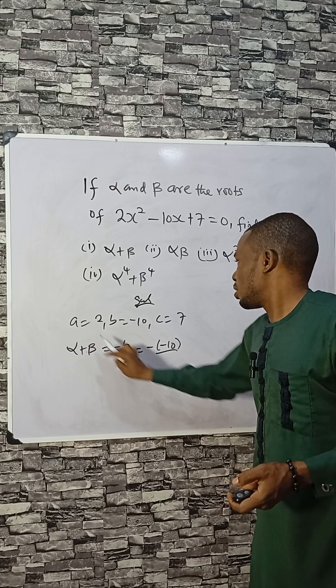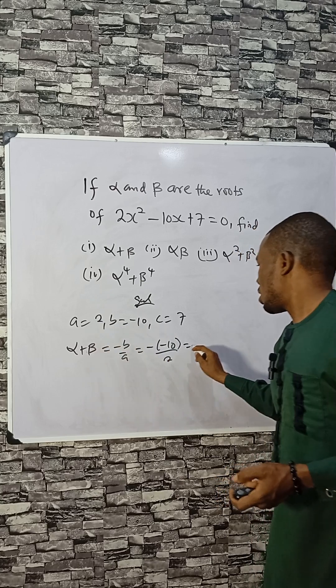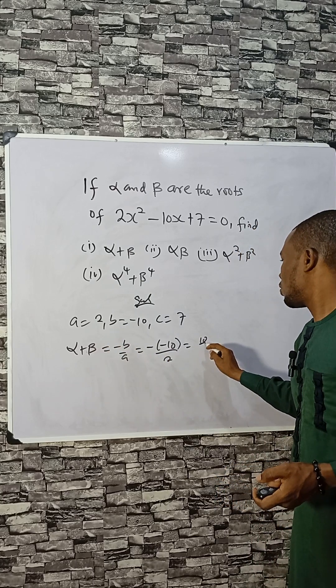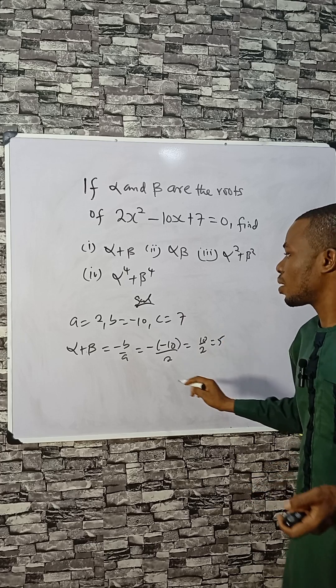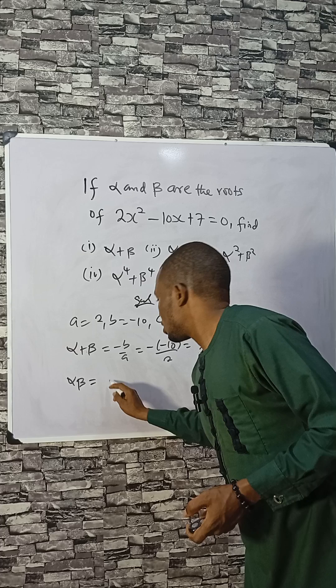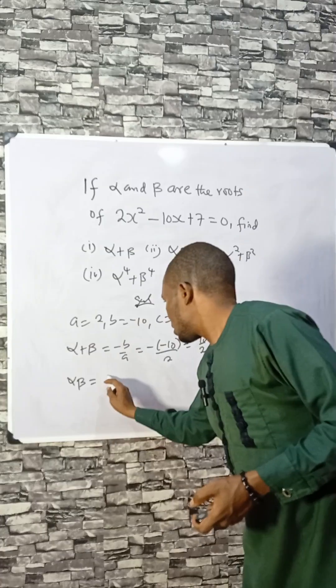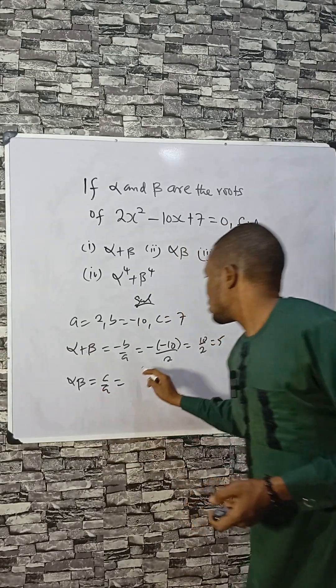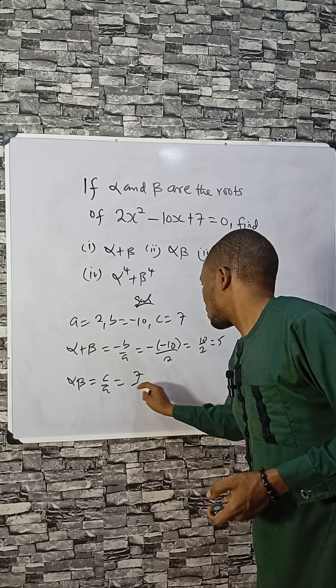The second one is alpha beta, that is alpha times beta, which is the product of roots: C over A. C is 7 while A is 2, so that is 3.5. Well, I can leave it this way.